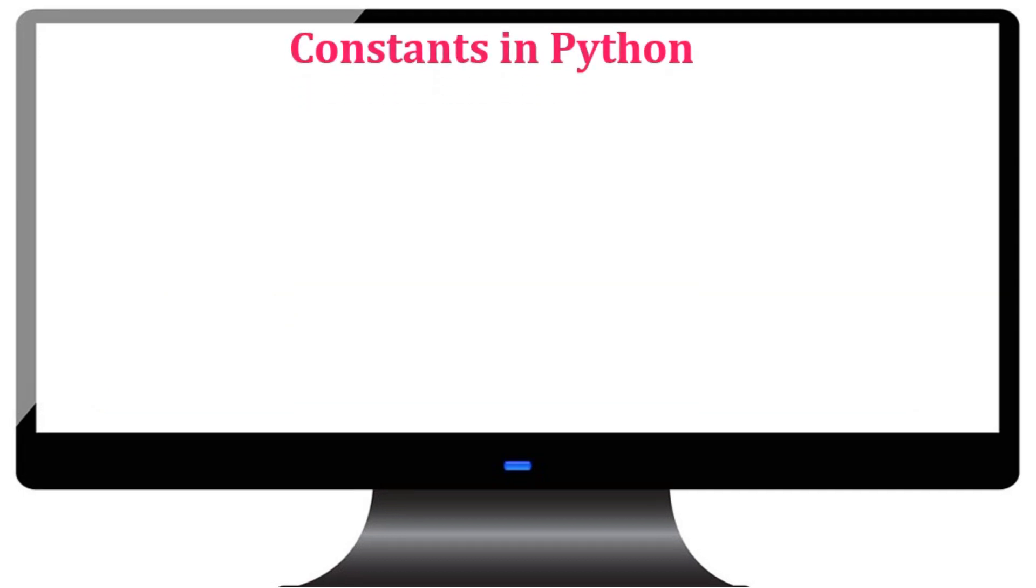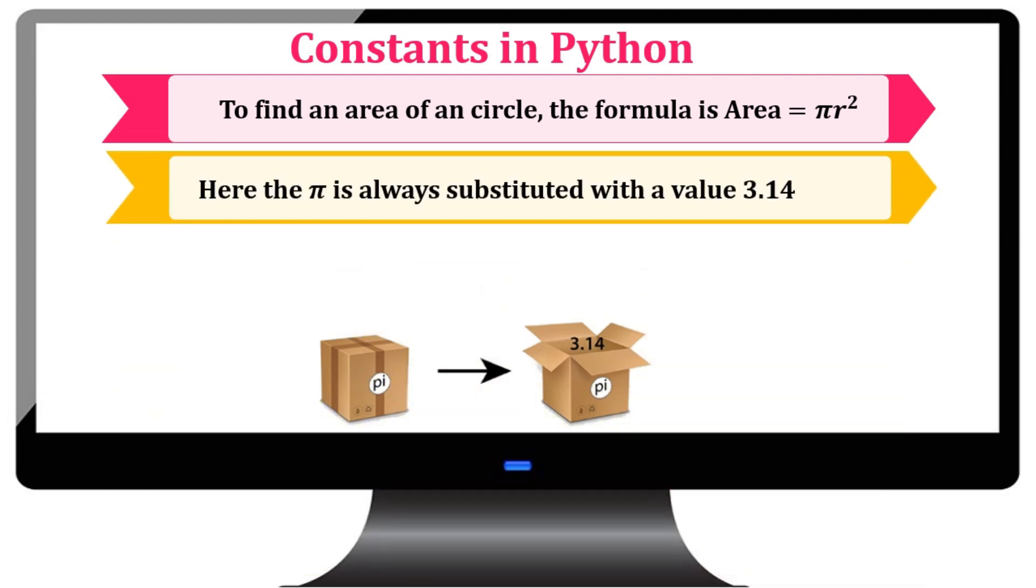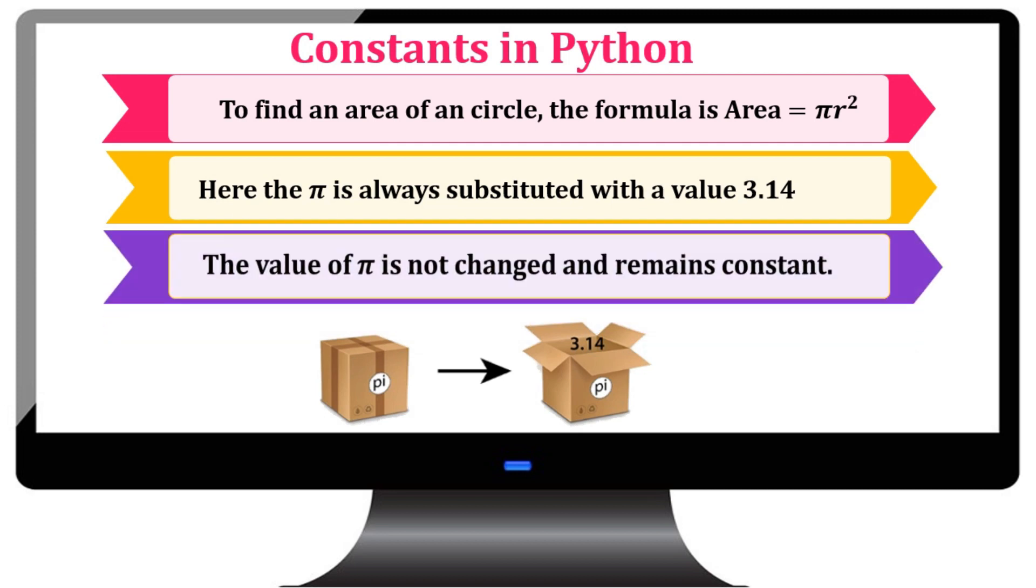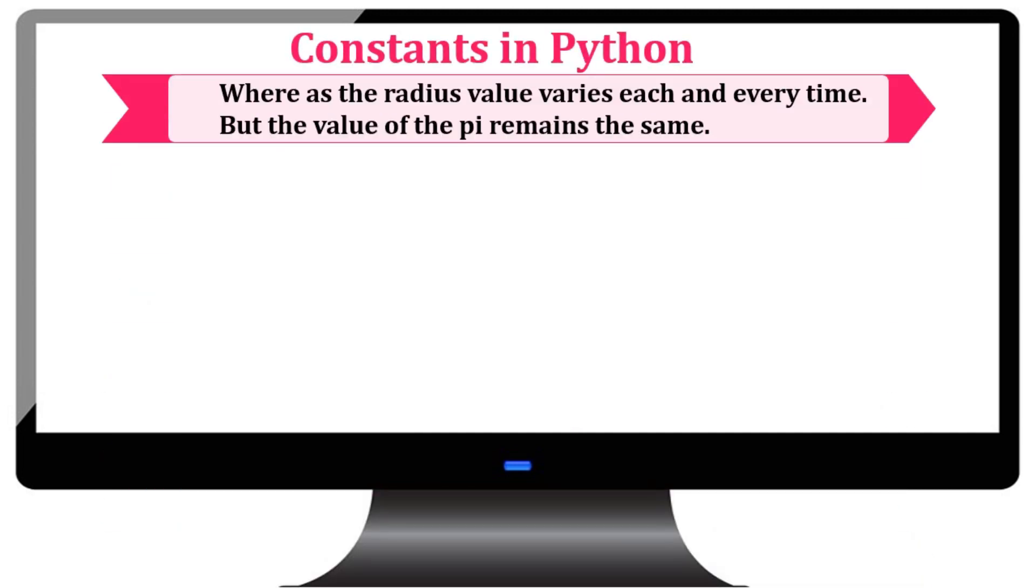Consider an example. To find an area of a circle, the formula is area is equal to pi r square. Here, the pi is always substituted with a value of 3.14. The value of pi is not changed and remains constant always through the entire life of the program. Whereas, the value of the radius varies each and every time but the value of pi remains the same.